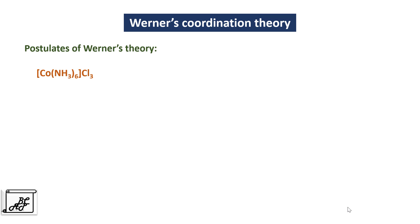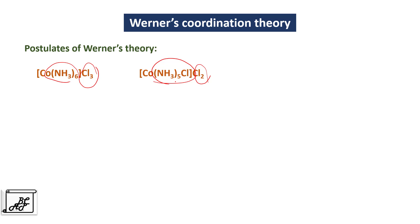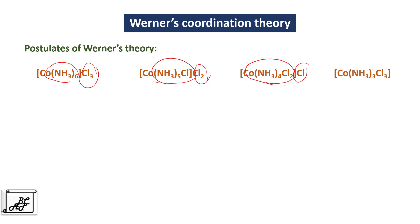Let's understand this theory with examples. The first example is [Co(NH3)6]Cl3: the primary valency is 3 chloride ions, that is minus 3, and the secondary valency is 6 coordinate bonds. In the second example, the primary valency is 2 as there are 2 chloride ions, but the secondary valency is again 6 — that is 5 ammonia molecules and 1 chloride ion. In the third example the primary valency is 1 but the secondary valency is 6, that is 4 ammonia and 2 chloride ions. In the last example there is no primary valency, only secondary valency of 6.